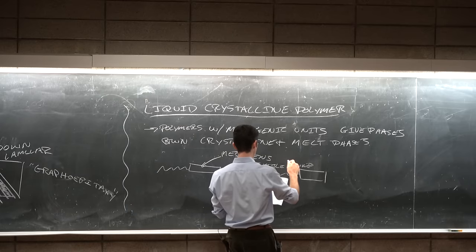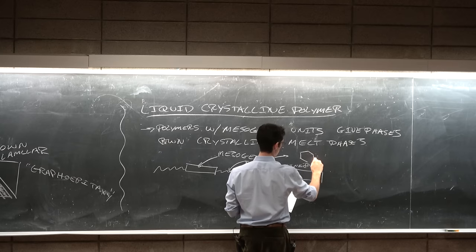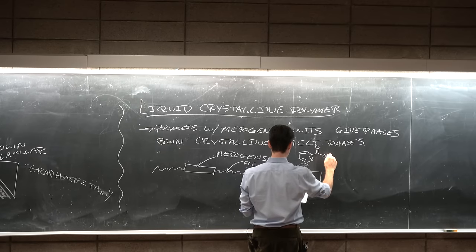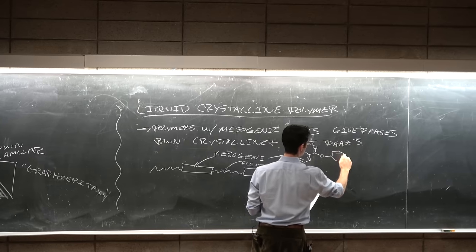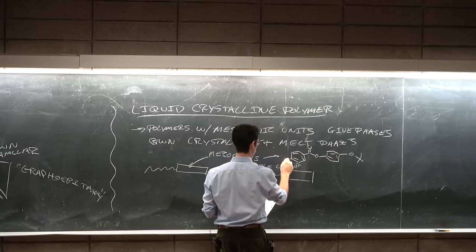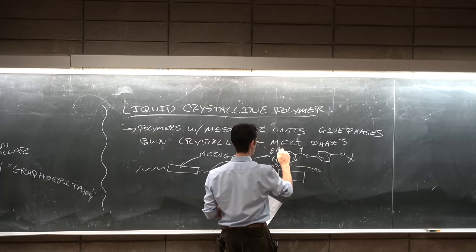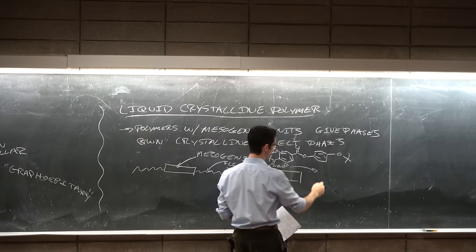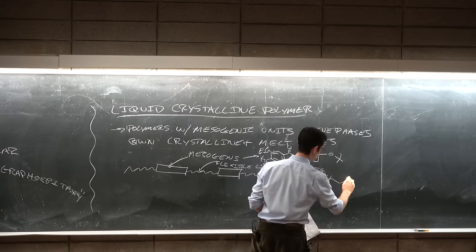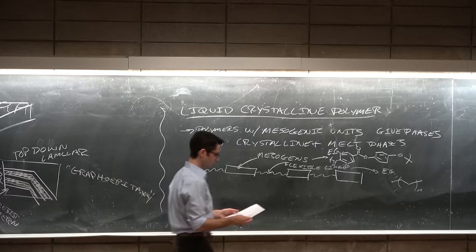So the mesogen could be something like something that has a lot of benzene rings in it and sp2 hybridized carbon atoms. And then the flexible linker could be something like, so this is just an example of a mesogen, and an example of a flexible linker could just be polyethylene, polyethylene oxide or something. Polyethylene. And what you get are mesophases.